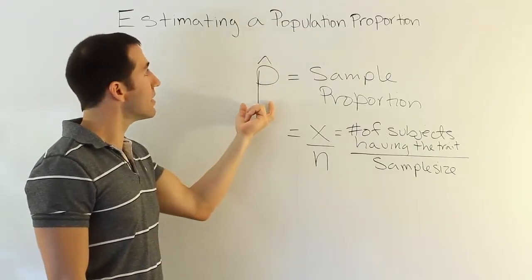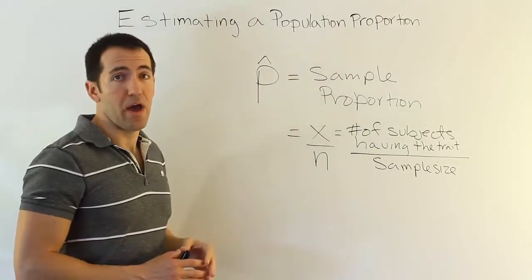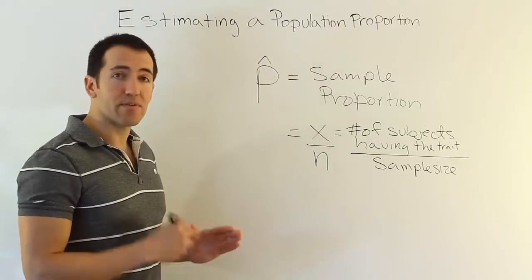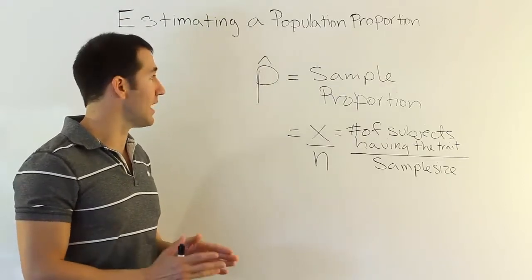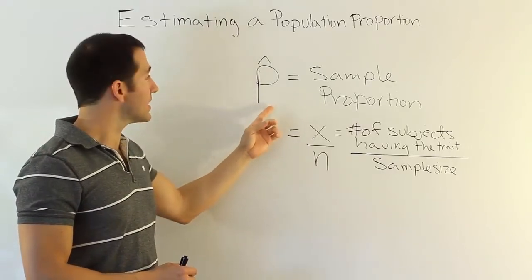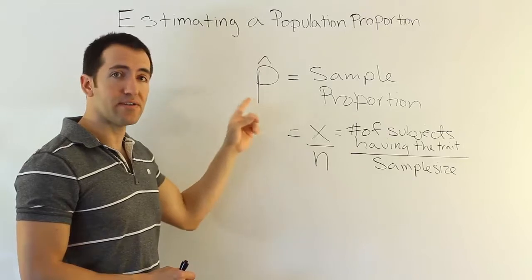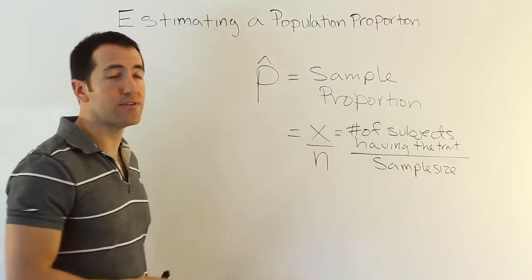So this is our point estimator of the population proportion. It's a single number that's used to estimate that quantity. But we learned that an interval estimator has a desirable trait of having that confidence level that we like. So we're going to form an interval around this by basically calculating the margin of error and adding and subtracting it to this p hat value. So let's talk about the four-step procedure then to do this.